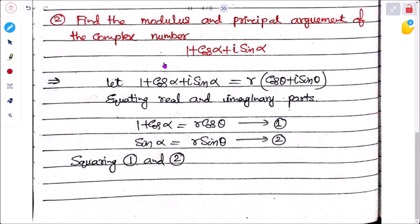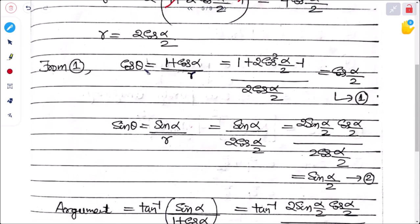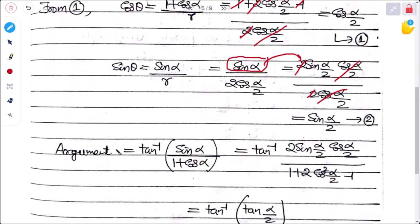From equation 1: cos θ = (1 + cos α)/r = 2cos²(α/2) / (2cos(α/2)) = cos(α/2). From equation 2: sin θ = sin α / r = sin α / (2cos(α/2)) = (2sin(α/2)cos(α/2)) / (2cos(α/2)) = sin(α/2).